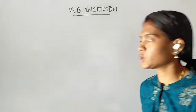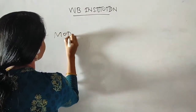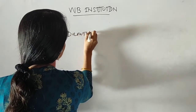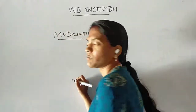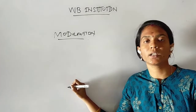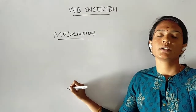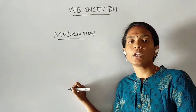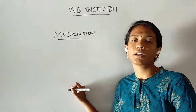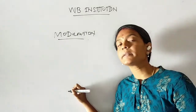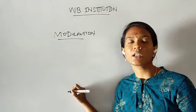First of all, what is modulation? Modulation is the process of converting data into electrical signals optimized for transmission. So data is converted into electrical signals — that is modulation. There are many types: angle modulation, pulse modulation, amplitude modulation.